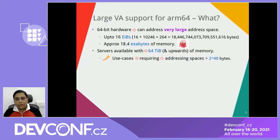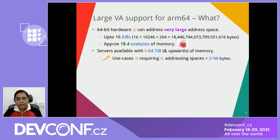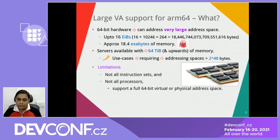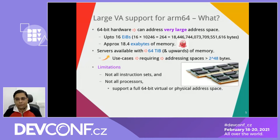We have more and more use cases coming up that require addressing ranges larger than what is normally allowed by a 48-bit virtual addressing CPU. Note that not all processors support the full 64-bit virtual or physical address space. This talk will focus mainly on ARM64 architecture and the virtual address support requirements. Similar discussion applies to the physical address space requirements for ARM64.